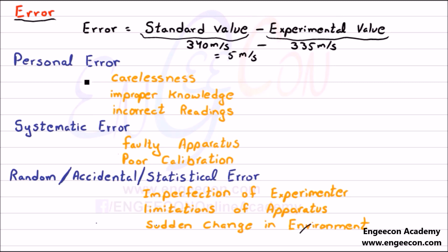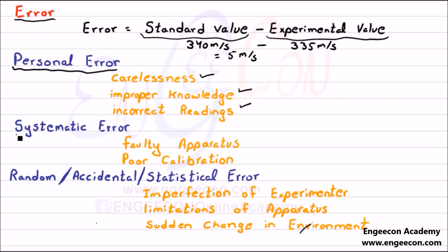Here we have three types of error. The first one is personal error, which arises due to carelessness, improper or incomplete knowledge, and inaccurate or incorrect readings. The second one is systematic error, which arises due to faulty operators and poor calibrations.